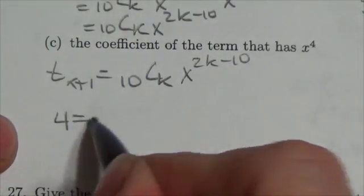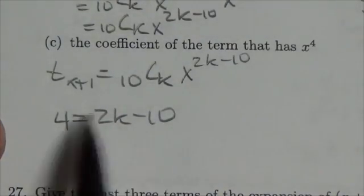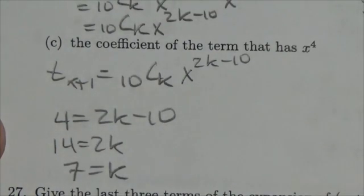So really this boils down to this: when does this occur? Well, bring the 10 over and I'm going to get 14 is equal to 2k, which means k is equal to 7.